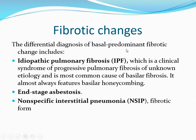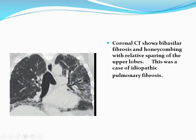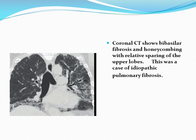The differential diagnosis for basal predominant fibrotic changes includes idiopathic pulmonary fibrosis (IPF), which is a clinical syndrome of progressive pulmonary fibrosis of unknown etiology and the most common cause of basal fibrosis. It almost always features basal honeycombing. Asbestosis produces pleural plaques and a specific interstitial pneumonia pattern. Axial CT shows basal fibrosis and honeycombing with relative sparing of the upper lobes — this was a case of IPF, showing an apico-basal gradient that increases in severity from the apex to the base.